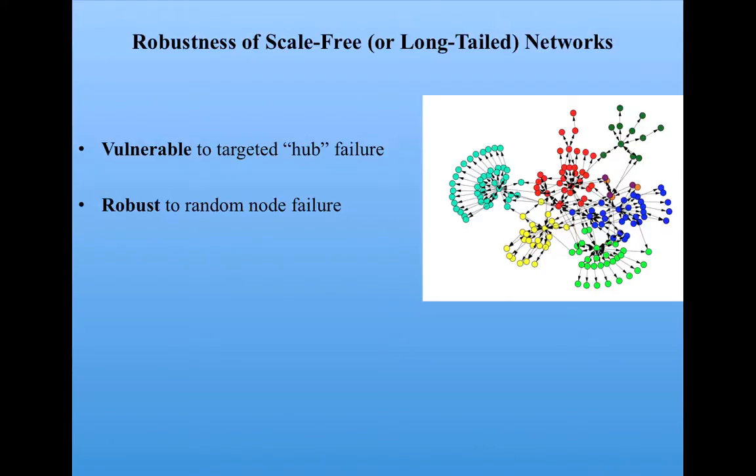Although these networks are vulnerable to targeted hub failure, they're also robust to random node failure. If a single node becomes unusable for some reason, since most nodes have very low degree, it's not going to have a big effect on the network. In the internet, for example, servers are going down all the time, being taken out of commission for temporary periods, but because of the long-tailed structure of these networks, such random node failure often doesn't have much of an effect.